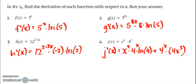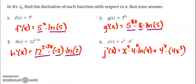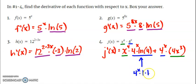Be mindful that the functions were labeled f, g, h, and j, so label your derivatives f prime, g prime, h prime, and j prime. Each follows the rule. For f: 5 to the x times the derivative of x (which is 1) times the natural log of 5. For g: 5 to the 8x times the derivative of the exponent times the natural log of 5. For h: 12 to the (2 minus 3x) times the derivative of the exponent times the natural log of 12. For j, a product rule is needed: first times derivative of second plus second times derivative of first — the new rule appears as 4 to the x times 1 times the natural log of 4.